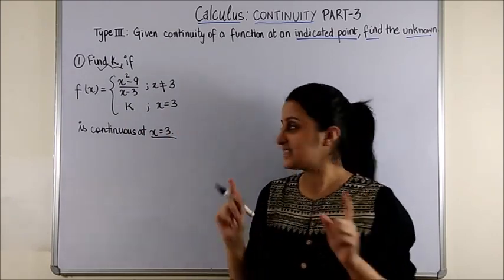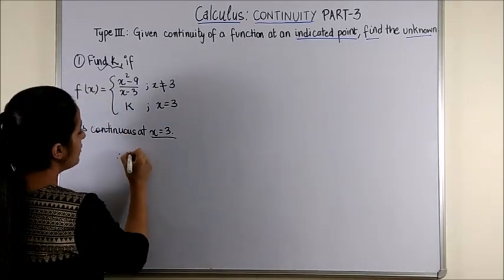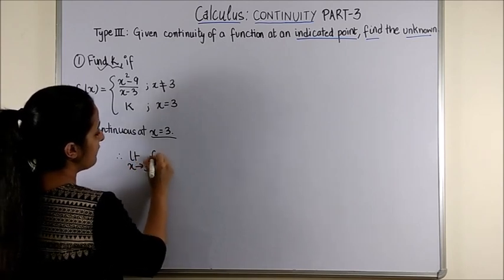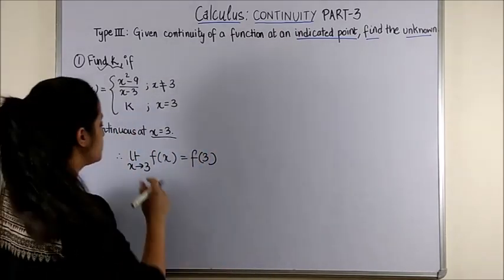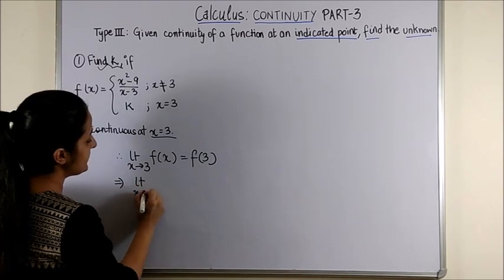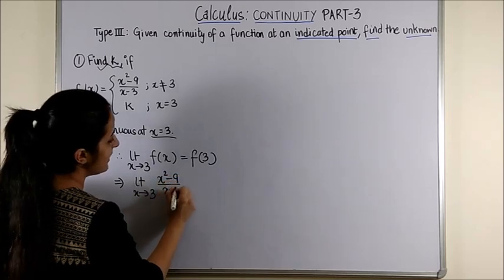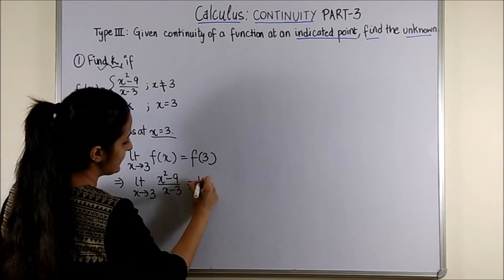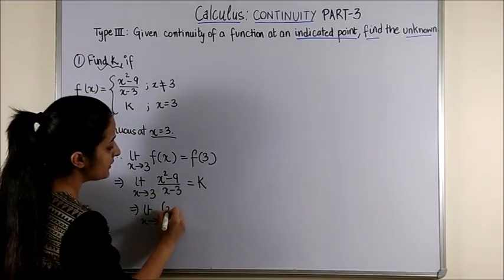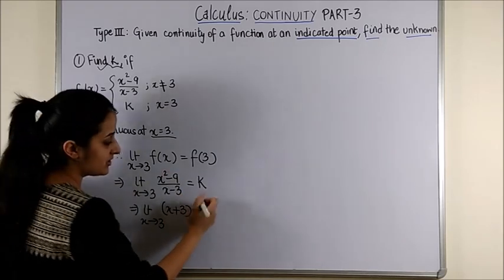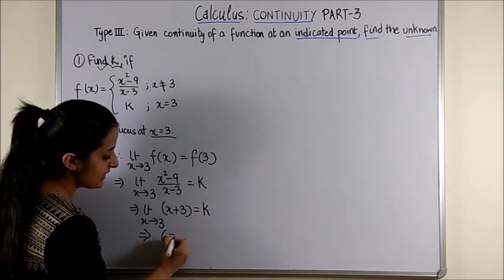So the very first step, the moment it says that the function is continuous at x equal to 3, therefore limit x tending to 3 of fx should be equal to f of 3. So first we write the definition of continuity and then we just replace. That means limit x tending to 3, in place of fx I put x square minus 9 over x minus 3 is equal to f of 3 which is k. So on solving this you can factorize and then cancel out x minus 3 from numerator and denominator. This implies the moment you substitute you get k as 6.